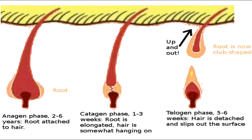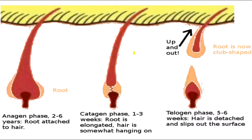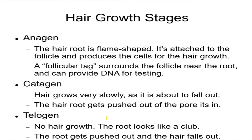The telogen phase is when the hair is completely detached and eventually works its way out to the surface and falls out. These are usually the kind of hairs that are found at crime scenes — the ones that fall out. The follicular tag is the part around the root. The anagen phase is when it's growing — the hair is healthy, flame-shaped, and it actually has DNA-containing cells.